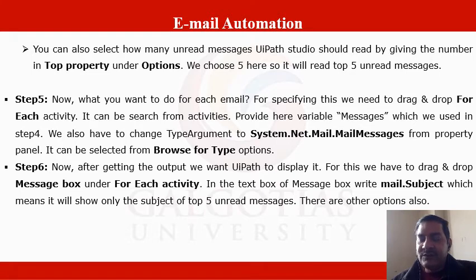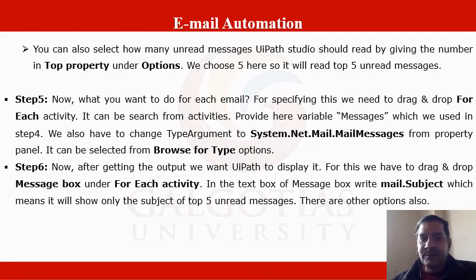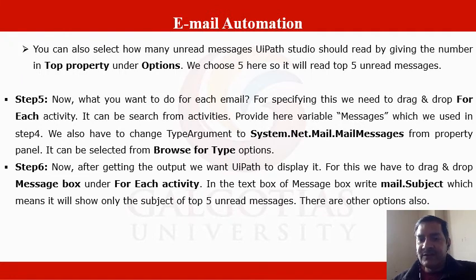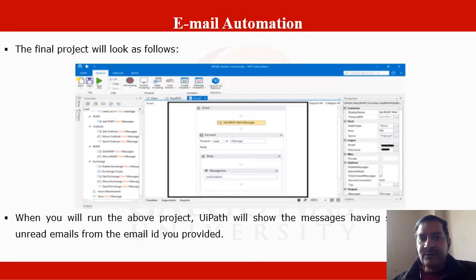Step 5: for processing each mail, drag and drop the For Each activity. For Each means it will iterate through all messages - first email, second email, and so on up to the count specified. Provide the variable 'message' from step 4, and change the Type Argument to System.Net.Mail.MailMessage from the property panel using the Browse for Type option. Step 6: drag and drop a Message Box under the For Each activity. In the message text box, write 'mail.Subject', which will show the subject of each of the top 500 messages.